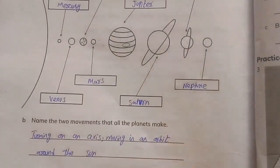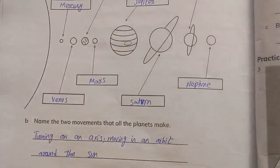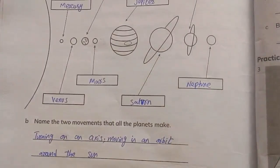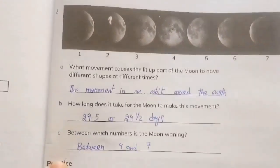Part number B: Name the two movements that all the planets make. Turning on an axis and moving in an orbit around the Sun. These are the two movements that all the planets make.